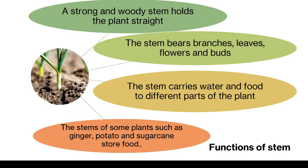Let us now discuss the main functions of the stem. A strong and woody stem holds the plant straight. The stem bears branches, leaves, flowers and buds. The stem carries water and food to different parts of the plant. The stems of some plants such as ginger, potato and sugarcane store food. We eat stems of these plants.